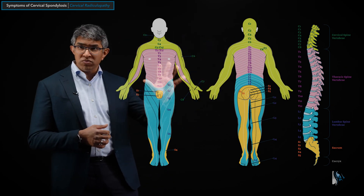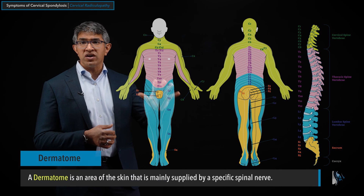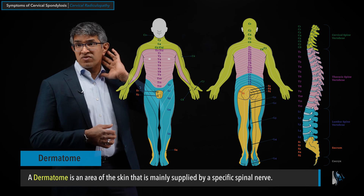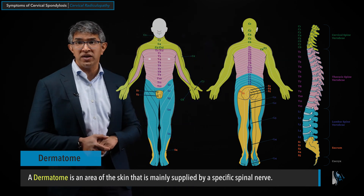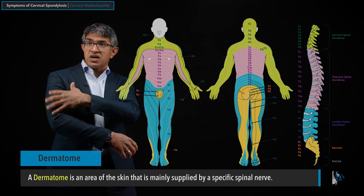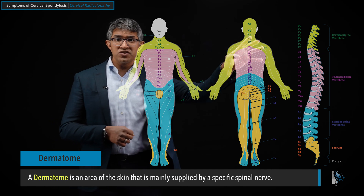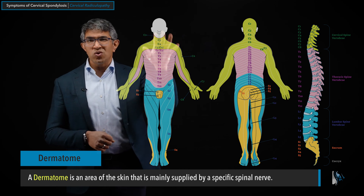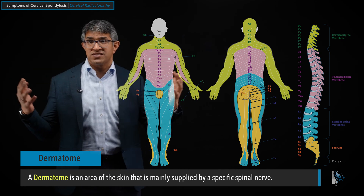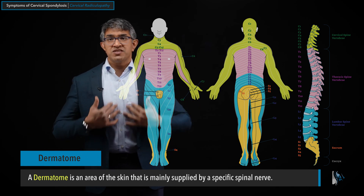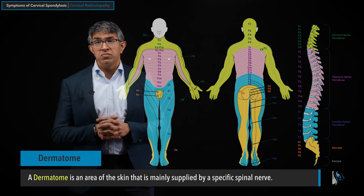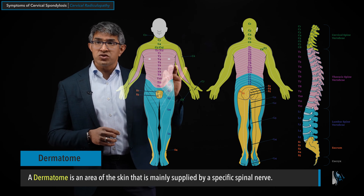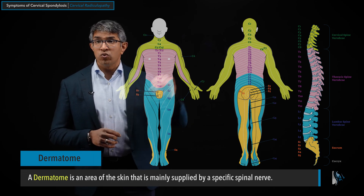These are dermatome maps. A dermatome is an area of skin supplied by a specific spinal nerve. The cervical spine mediates most of the symptoms into the arms — you can see these areas here, looking at somebody from the back and from the front. The distribution for cervical nerves is mostly into the upper neck and down into the arms. The thoracic spine covers the trunk, the lumbar spine the lower body. Myelopathy can affect everything below, but radiculopathy just affects the distribution for that specific nerve.